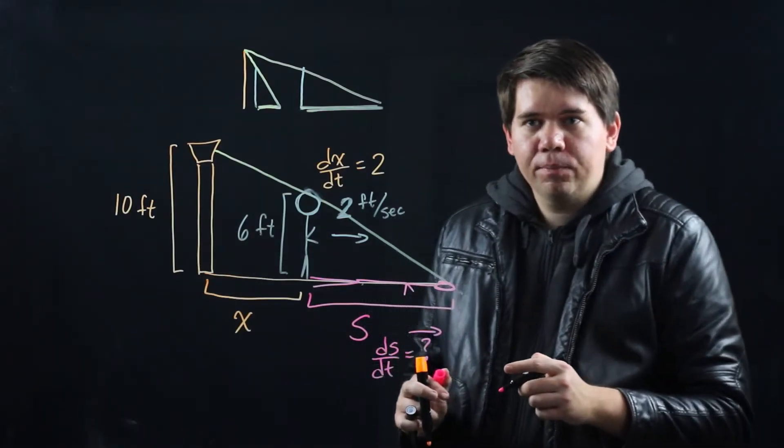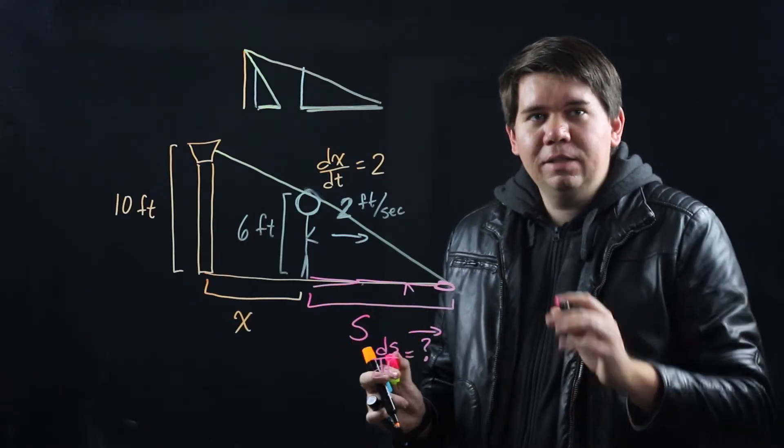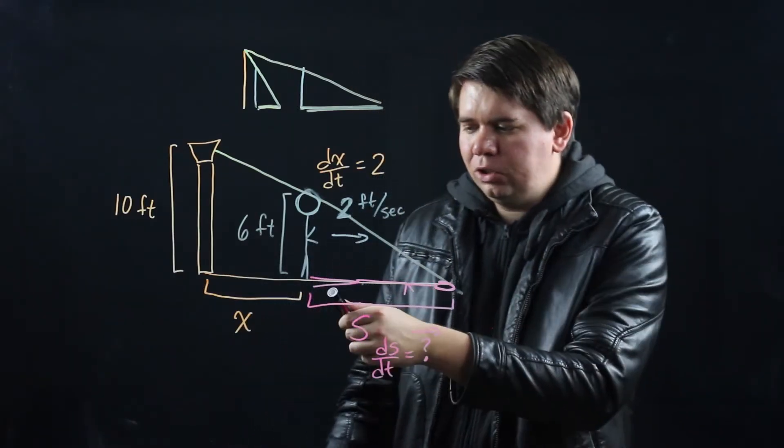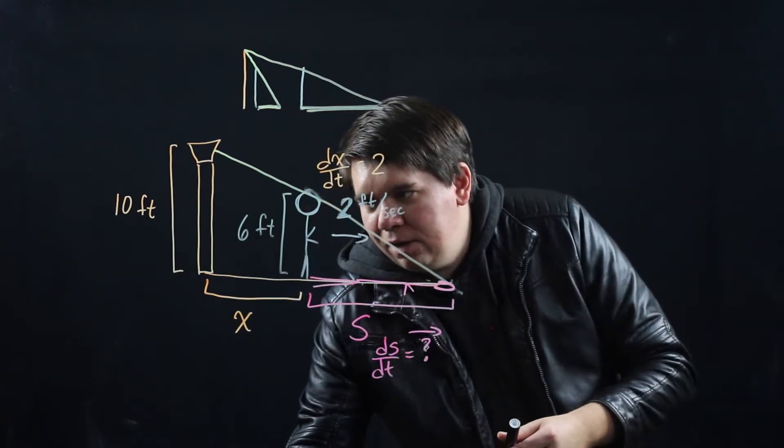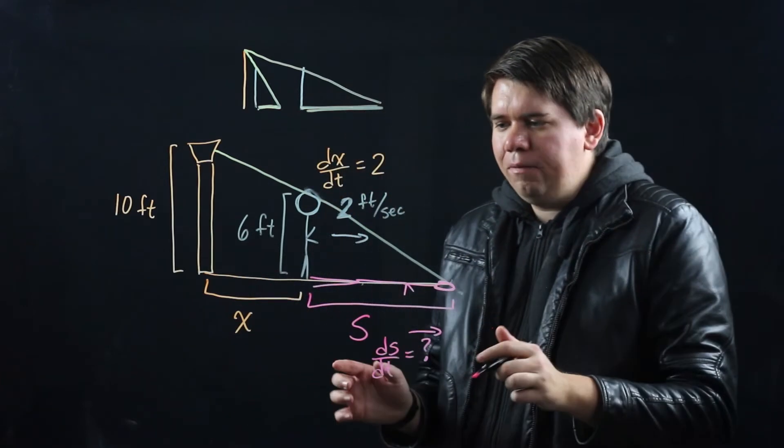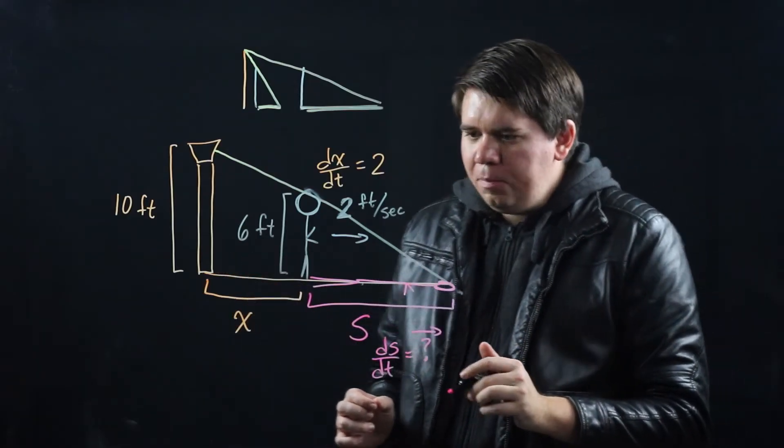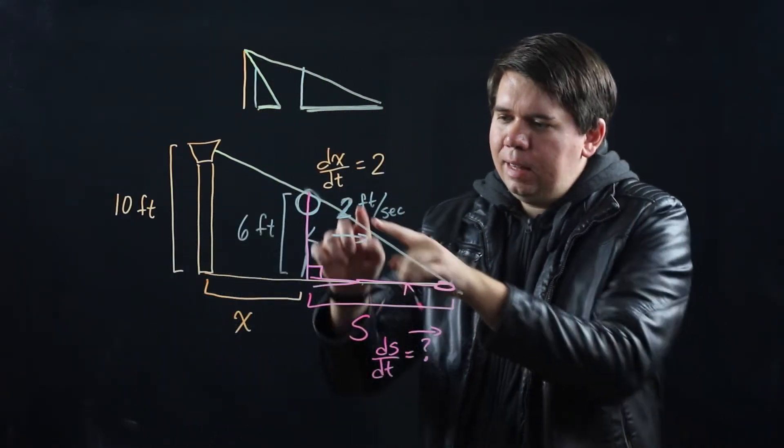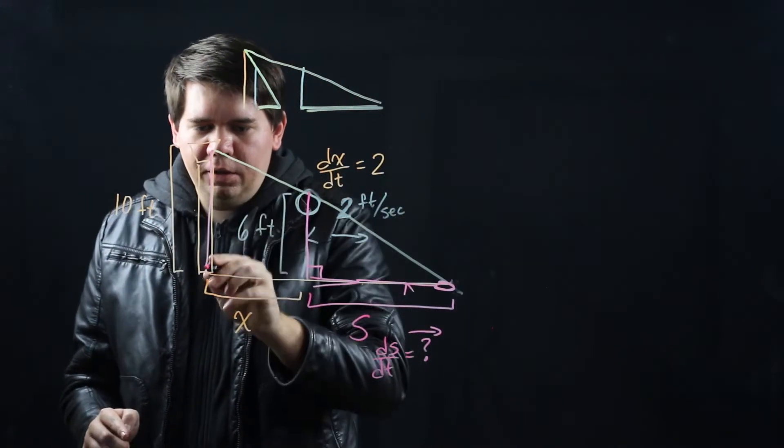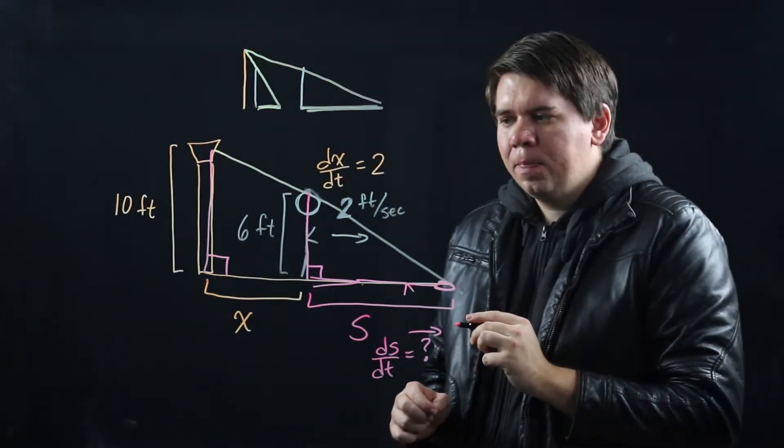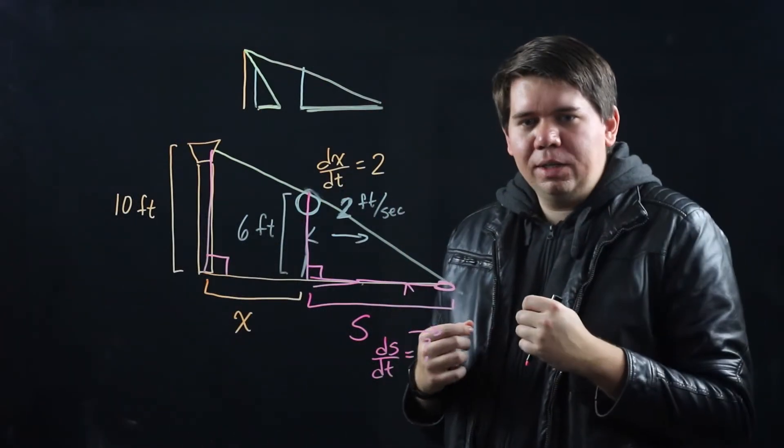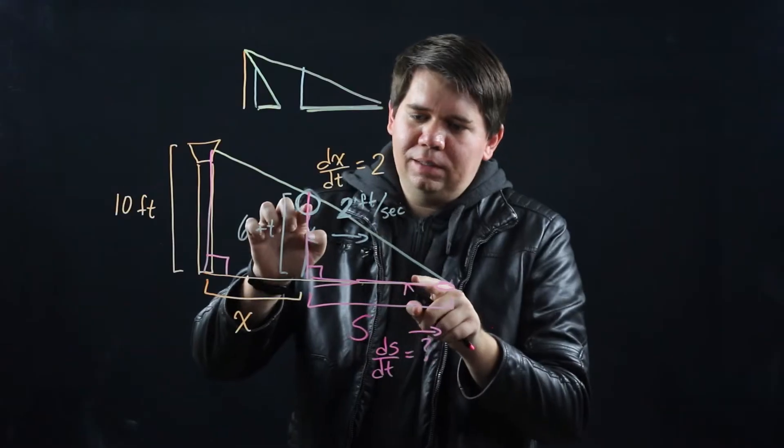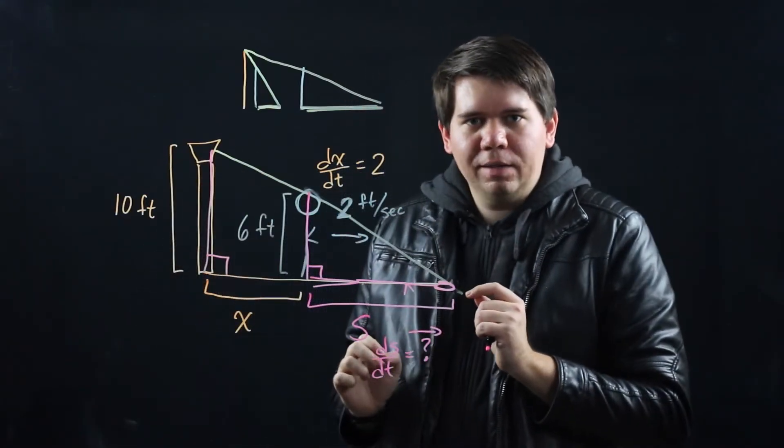What we need to do then is find some way of relating our x with our s. Can we find some relationship between x and s? Now maybe just looking at this it's not obvious what that relationship should be. But if we're a little bit careful, I think we can see here we have a right triangle, and that right triangle is part of a larger right triangle.